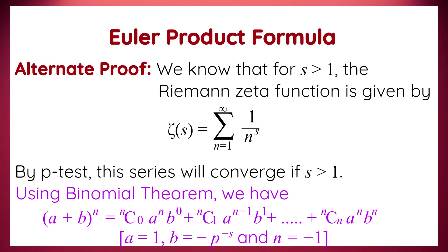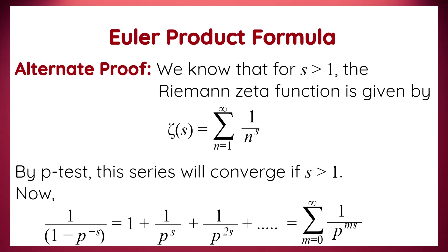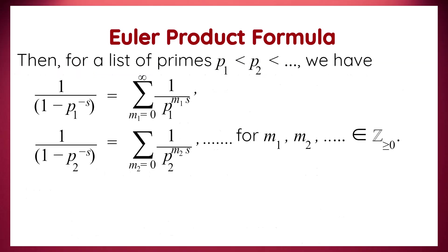Replacing a, b, and n with 1, minus p to the power minus s, and minus 1 respectively in the binomial formula, we get: 1 over (1 minus p to the power minus s) equals 1 plus 1 over p to the power s, plus 1 over p to the power 2s, and the series continues. This is a geometric series with 1 as the first term and 1 over p to the power s as the common ratio, having the general term 1 over p to the power ms, where m is an integer from 0 to infinity. This series can be written concisely as the sum over m from 0 to infinity of 1 over p to the power ms.